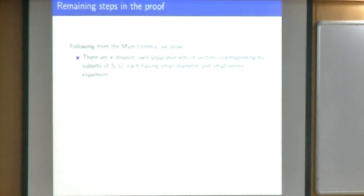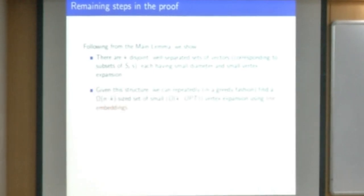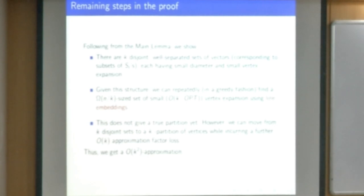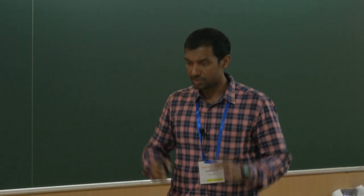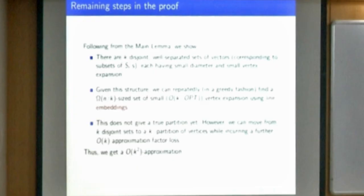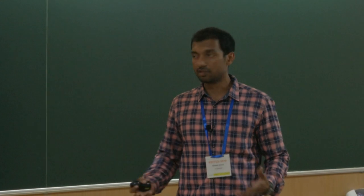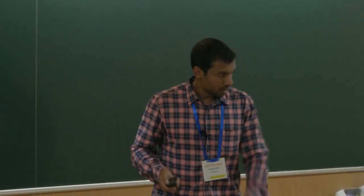Once you show that the SDP solutions are clustered, there are a couple more steps to get to the final answer. First, you show that each of the k disjoint sets that are far apart do indeed have small expansion. Secondly, using a greedy choice, you can iteratively extract disjoint sets which have at most k times the optimal vertex expansion. But this gives k disjoint sets, not a partition of the vertex set; you can move from disjoint sets to a partition by losing a further factor of order k in the approximation — giving the overall order k-squared approximation.